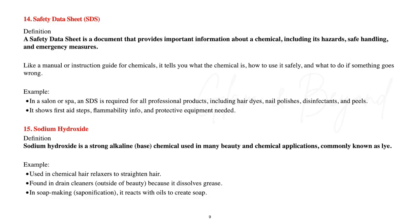Number fourteen: safety data sheet, also known as SDS. A safety data sheet is a document that provides important information about a chemical, including its hazards, safe handling, and emergency measures — like a manual or instruction guide for chemicals. In a salon or spa, an SDS is required for all professional products including hair dyes, nail polishes, disinfectants, and chemical peels. It shows first aid steps, flammability info, and protective equipment needed.